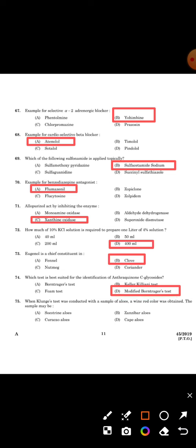Next: When Keller-Kiliani test was conducted with a sample of aloe, a wine red color was obtained. The sample may be - the answer is Option C, Curacao aloes.